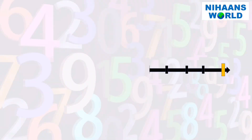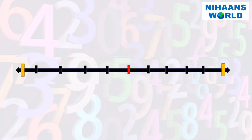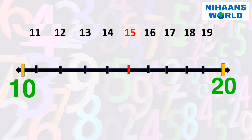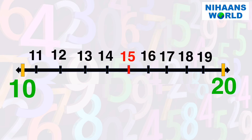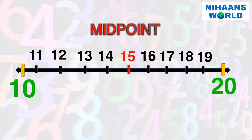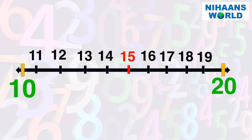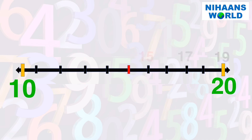On a number line, numbers to the right have a greater value than numbers to the left. Every number that ends in digits one through nine sits between two tens — the nearest tens on either side are useful benchmarks. The midpoint is the number that is halfway between two benchmarks. If the number you want to round is less than the midpoint, round down. If it is at the midpoint or greater, round up.